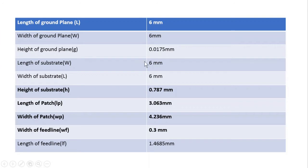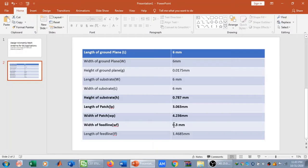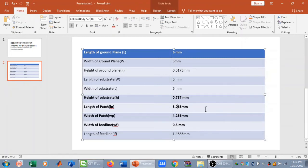The height of the ground plane is 0.0175 mm, height of substrate is 0.787 mm, length of patch is 3.063 mm, width of patch is 4.236 mm, width of feed line is 0.3 mm, and length of feed line is 1.4685 mm. The bold dimensions are the primary ones — they define the operational frequency of the antenna — and are calculated using the equations we discussed in earlier microstrip patch antenna videos.